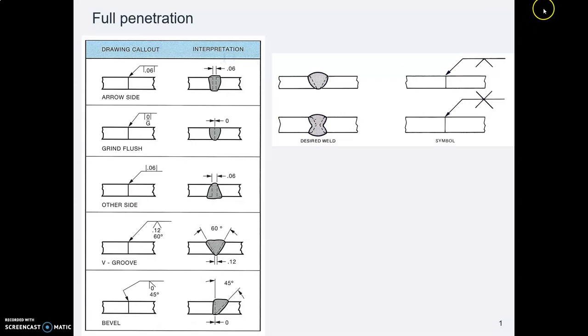Now thinking about how to talk about size when you're looking at groove welds. First of all, if you intend the weld to go all the way through, either all from one side or coming in from two sides, you don't say anything about depth or size. You just put the symbol and that means full penetration that weld goes all the way through.